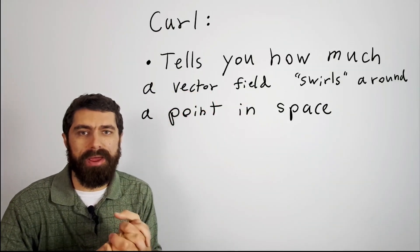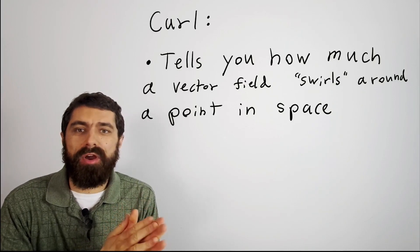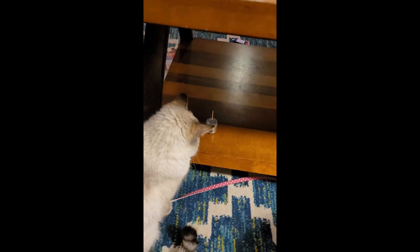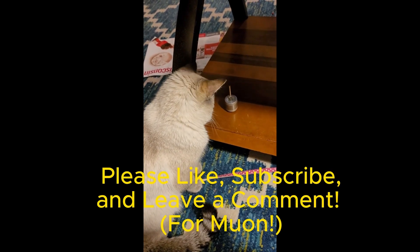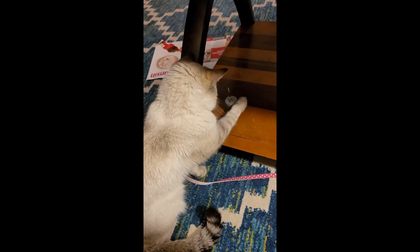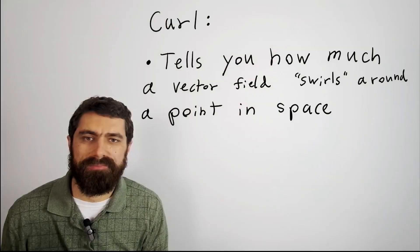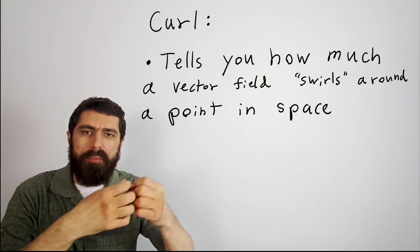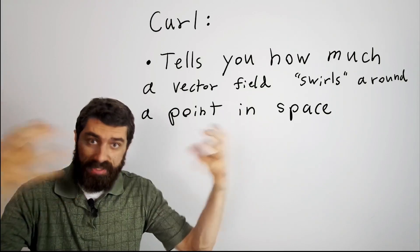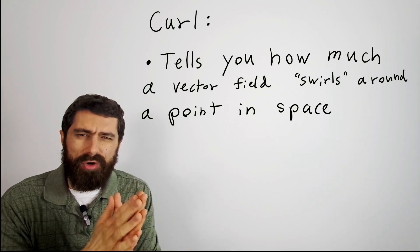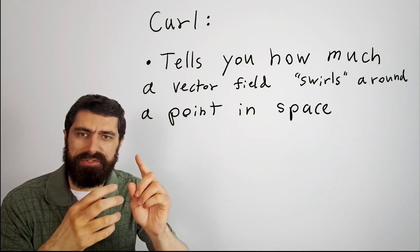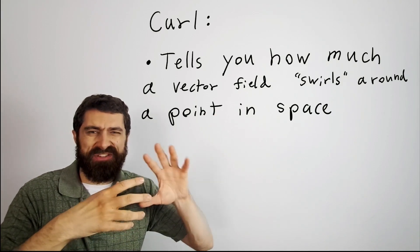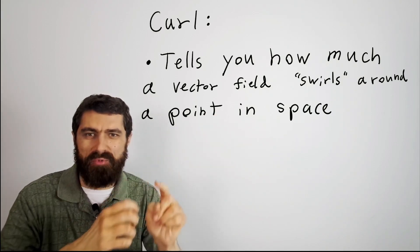In today's video we are going to be talking about curl. It's a pretty cool concept and really important in the field of electromagnetics. In the previous video we talked about divergence and how divergence tells you how much flux is going out of or into a point in space. Curl is kind of similar, although instead of talking about how much is going in or out of a point, curl basically tells you how much a vector field is swirling about a particular point in space.